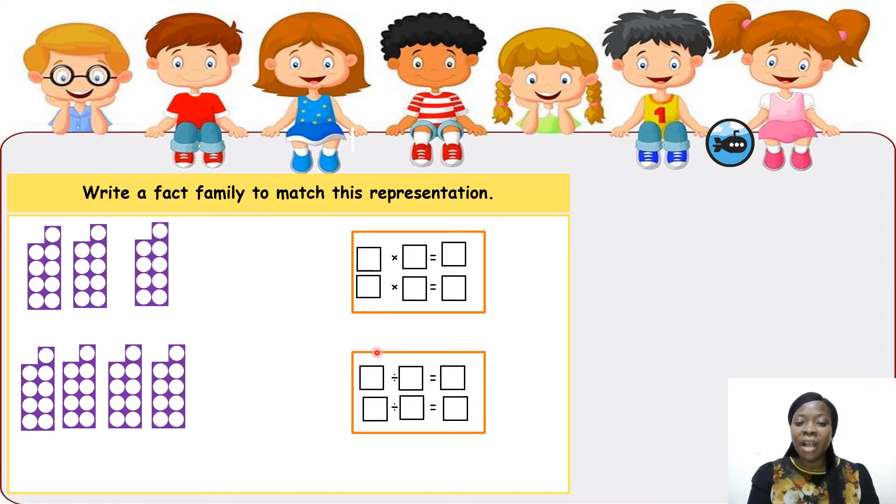Now we are asked to write a fact family to match this representation. What is a fact family? A fact family shows us the answers or the numbers we can make using the same group of numbers. Example, the fact family for 2 times 3 could be 2 times 3 equals 6 or change the order of the number. Remember, I've taught you before that multiplication is commutative. The order of the number does not change the answer.